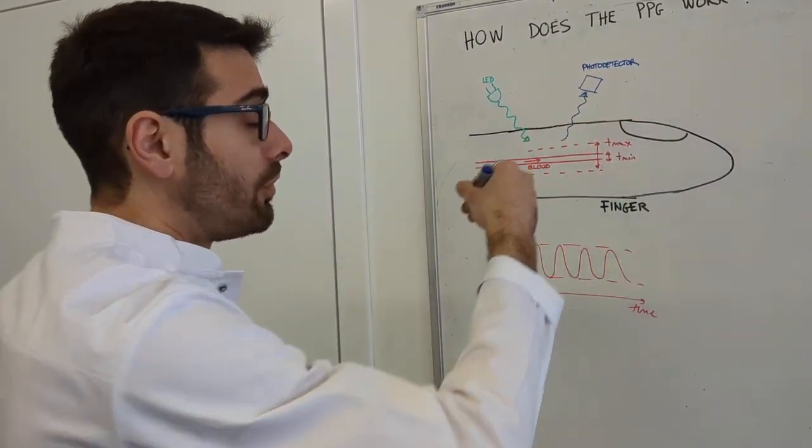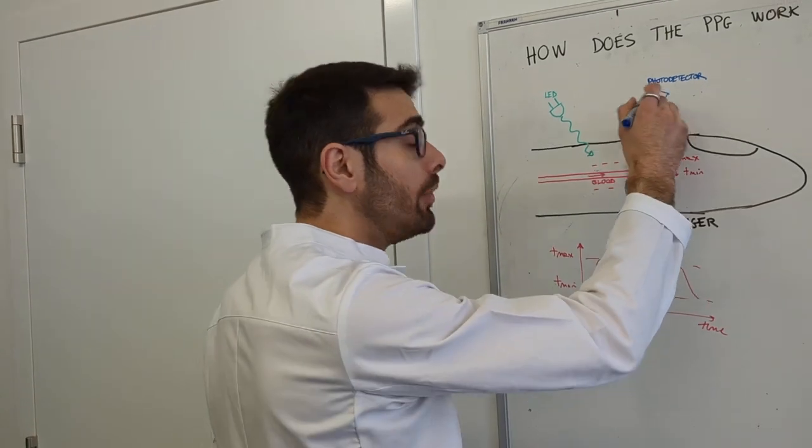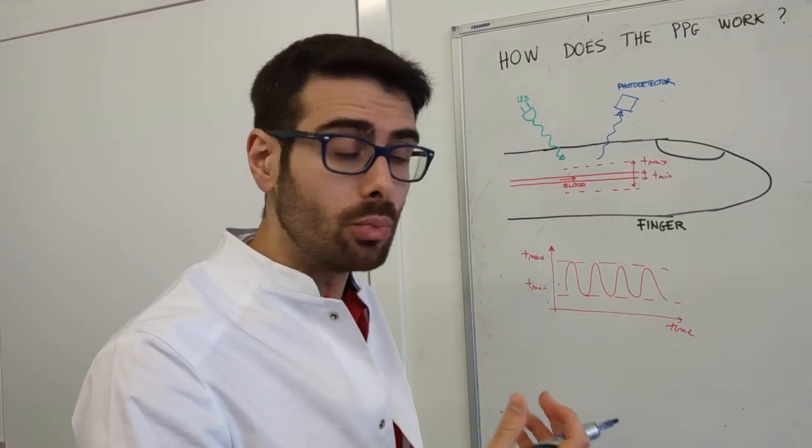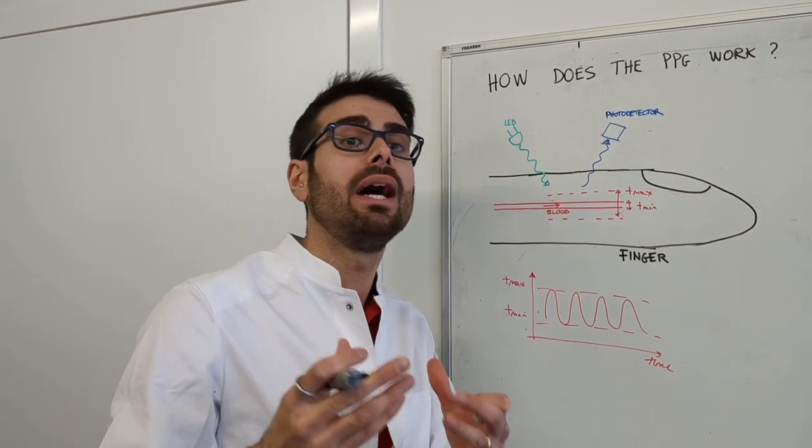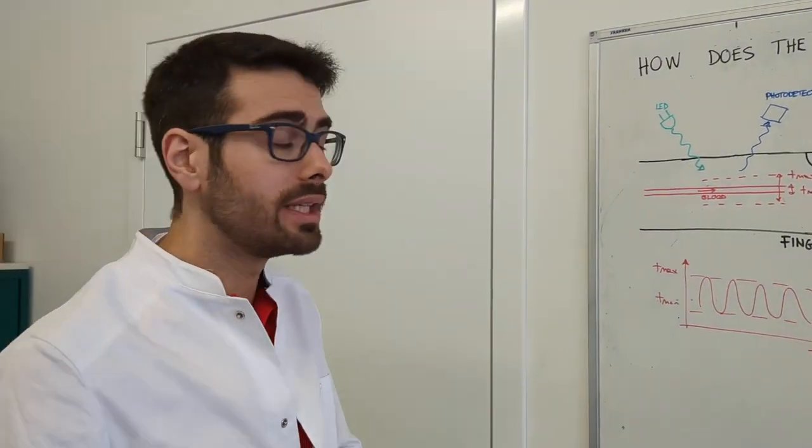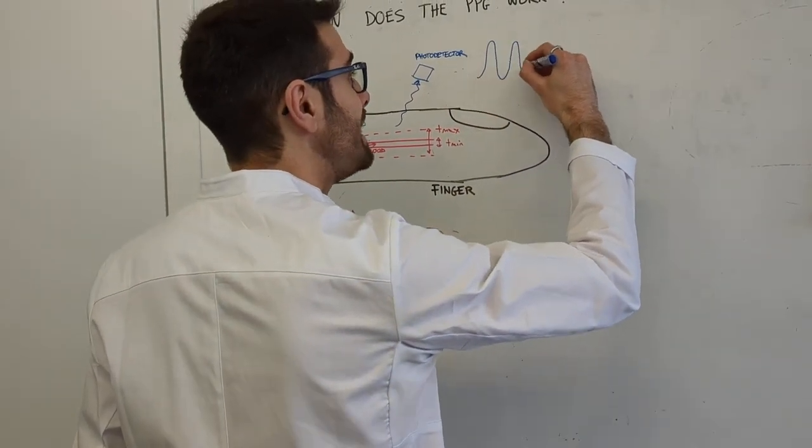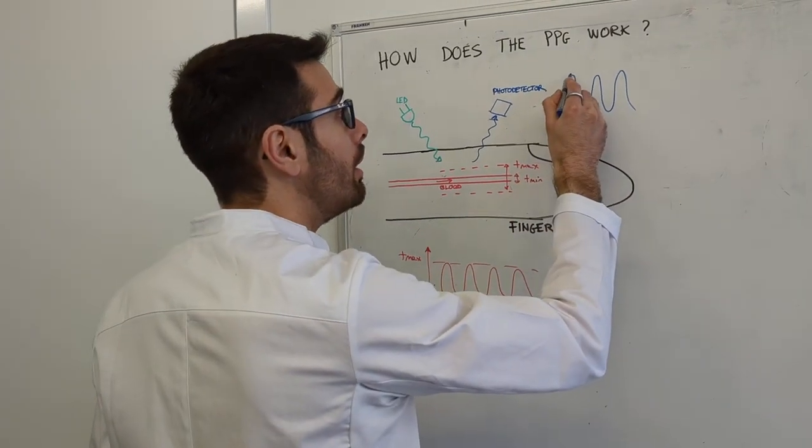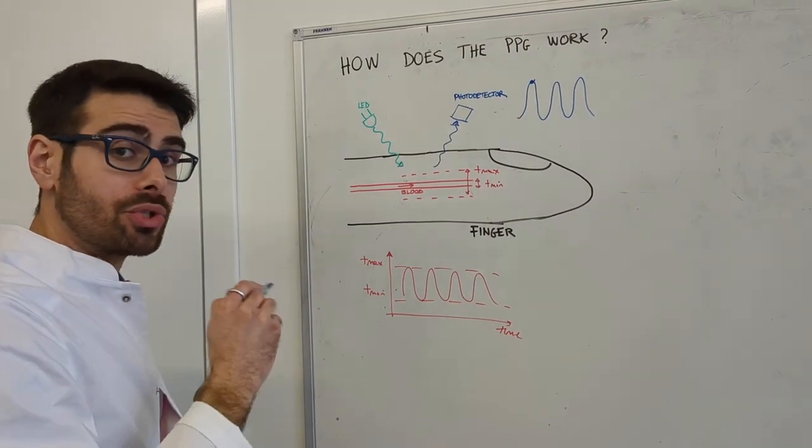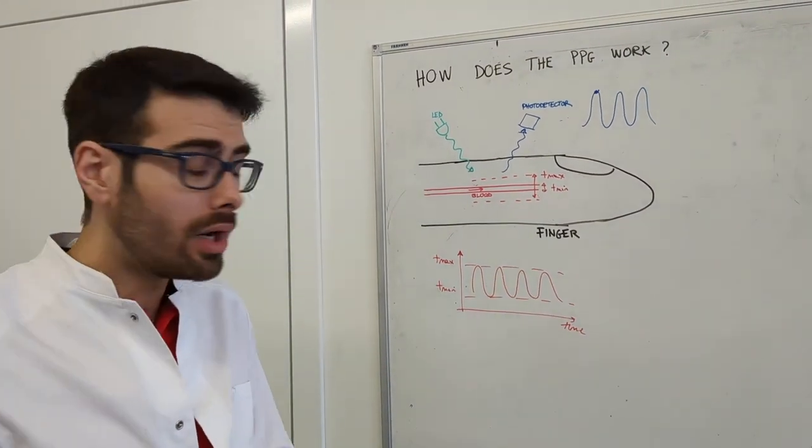The photodetector is capturing these photons and converting them into an electrical signal, which is exactly the PPG signal that is processed by the application running on your phone. It will be a signal that is an AC oscillating frequency.